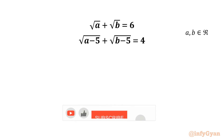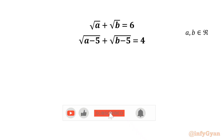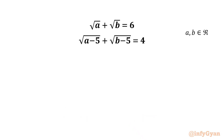Welcome to Infigyan friends. Today in this video we are going to solve one Math Olympiad challenge from Indonesia. The problem is: square root of a plus square root of b equals 6, and square root of (a minus 5) plus square root of (b minus 5) equals 4. We have to find the real values of a and b.